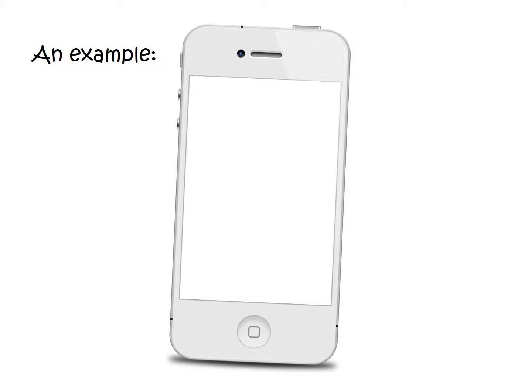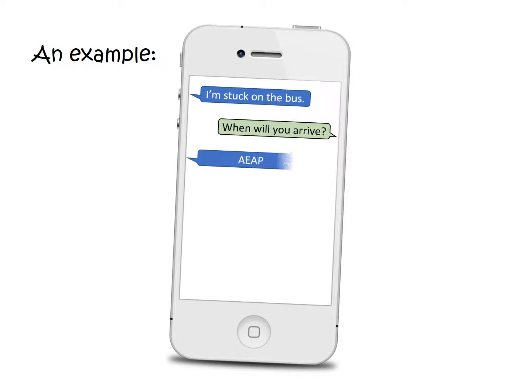Here's an example of it being used in a text message. I'm stuck on the bus. When will you arrive? AEAP — as early as possible.